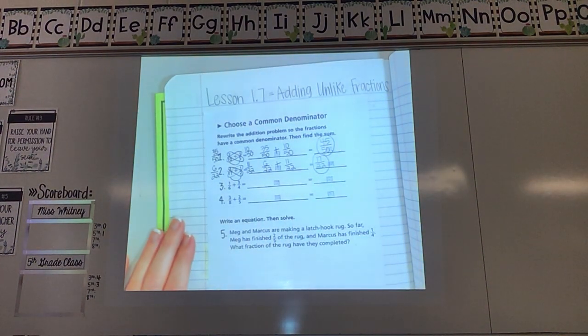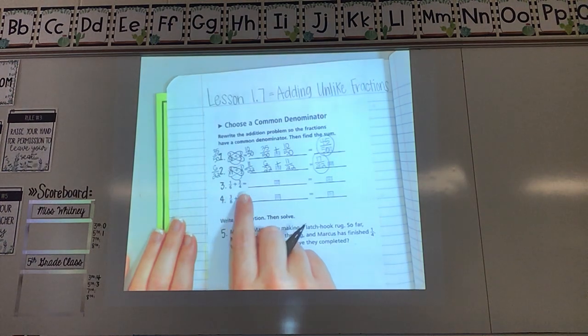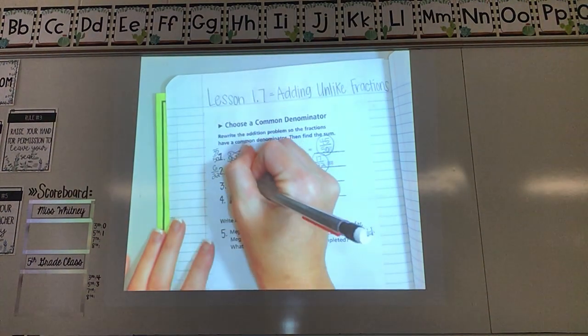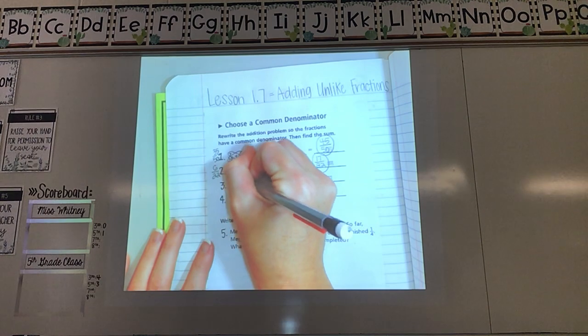Alright, number 3. 1 sixth plus 3 fourths. Looking at my bottom numbers, they are not the same. So what's the first thing I need to do? Hopefully you said cross multiply. Draw those circles.